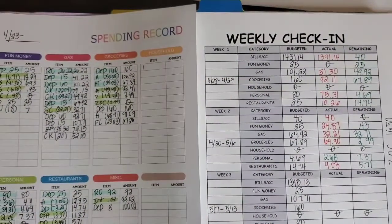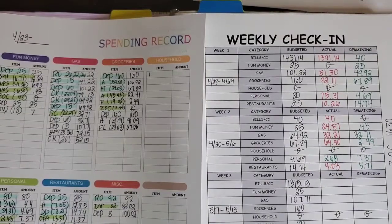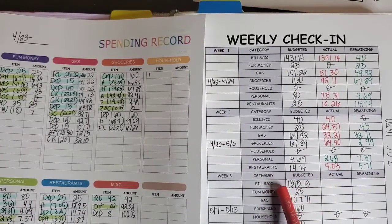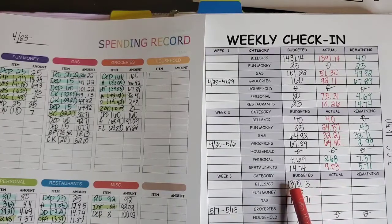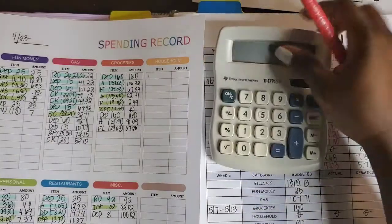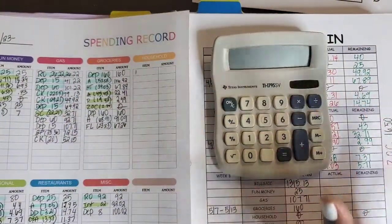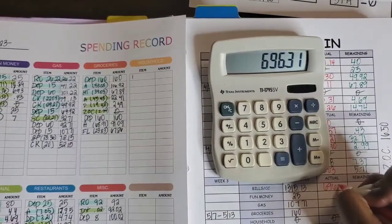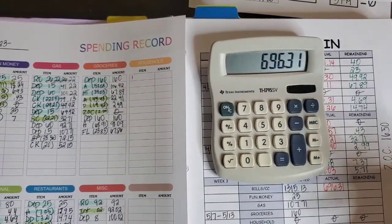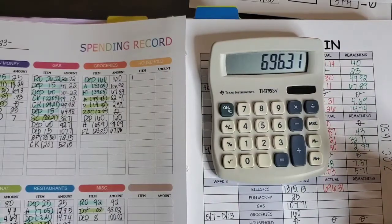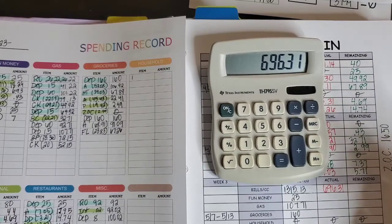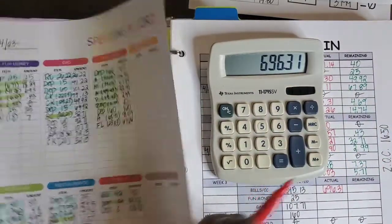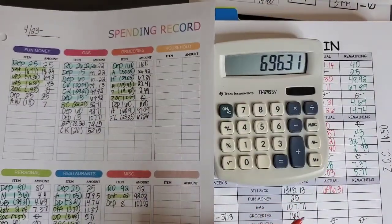Let's go ahead and we're going to pull out the envelope spending record. Alrighty, we are back. So this is for week three. Week three check-in. And this is from May 7th through May 13th. So the total for the bills and or credit card charges for the week is $1,315.13.